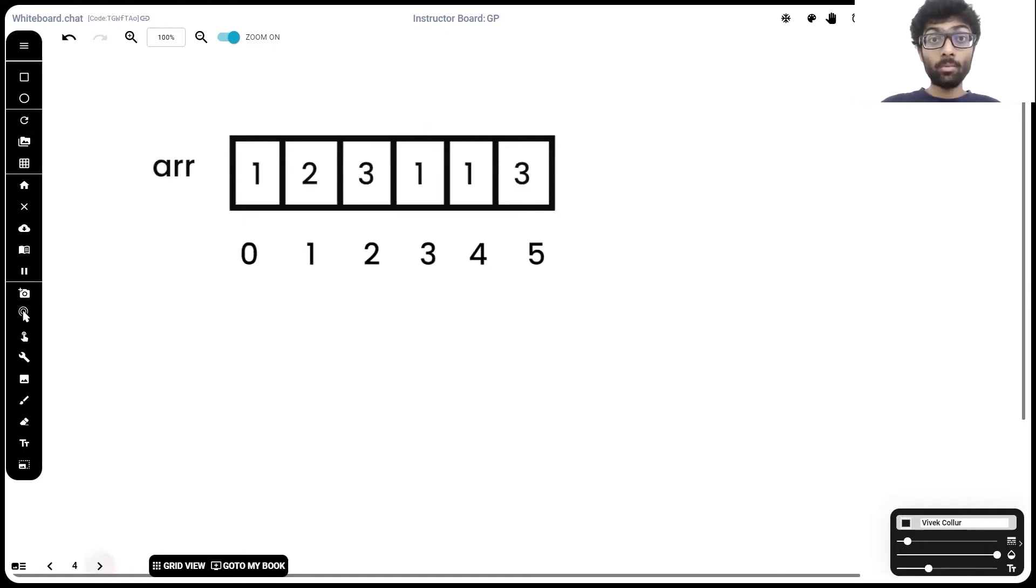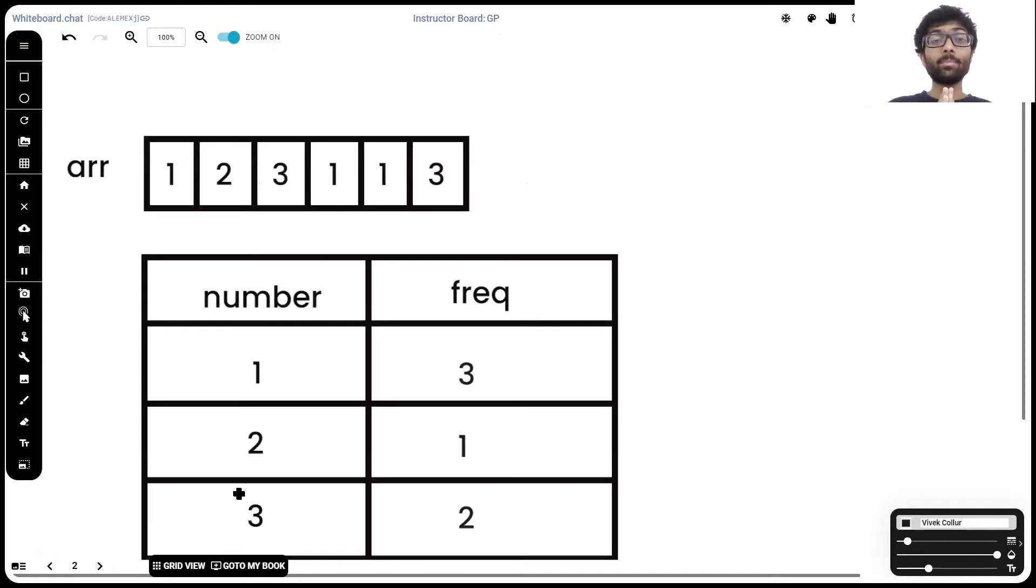Now a solution some of you guys might have come up with is what if we have two loops, i running from zero to n minus one and j running from i plus one to n, simply checking each element. That works but that has a complexity of big O of n squared. We're going to attempt to solve it in a time complexity of a meager big O of n and this is the method we're going to use to do so.